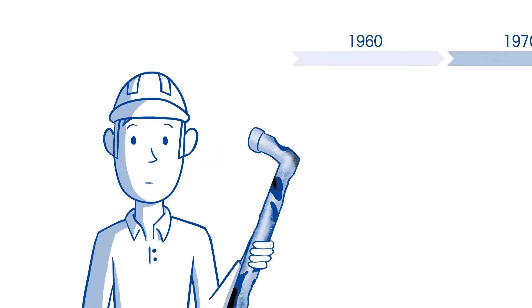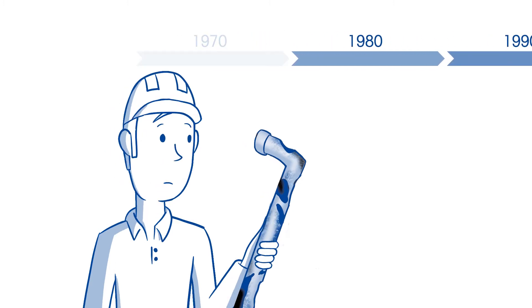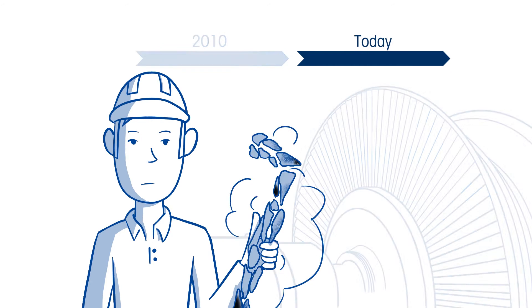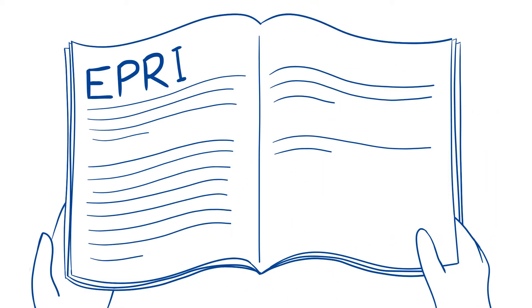For decades, power plants have been trying to control chloride and sulfate contamination that can cause corrosion and other damage to expensive equipment. Concentration limits of 2-3 ppb for chloride and sulfate are even specified in industry guidelines.